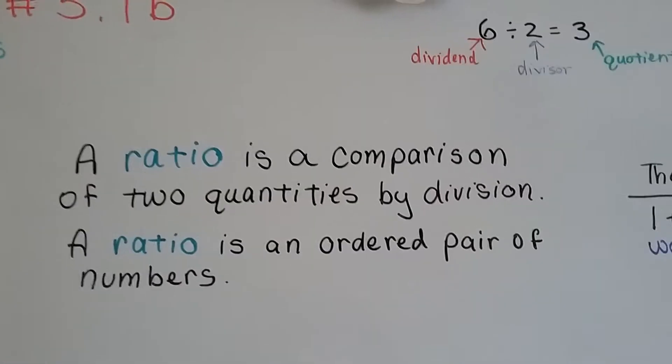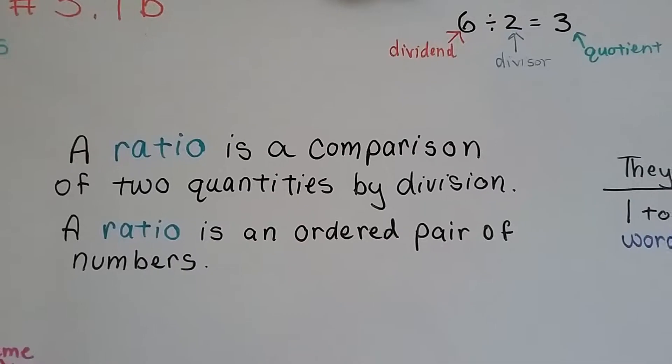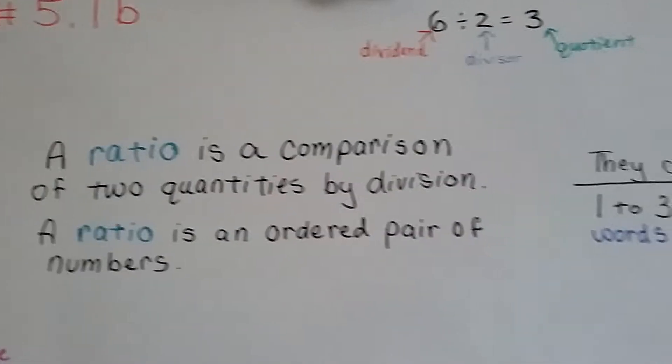As we talked about in the previous video, a ratio is a comparison of two quantities by division. A ratio is also an ordered pair of numbers.